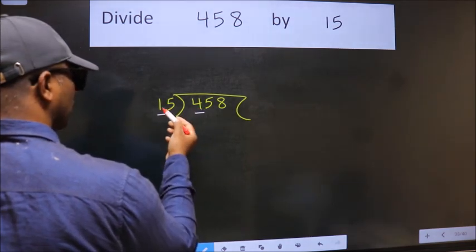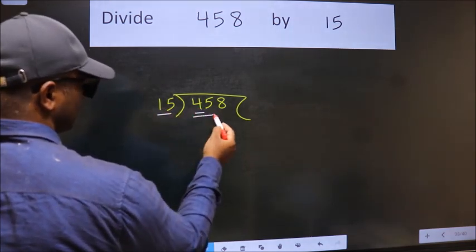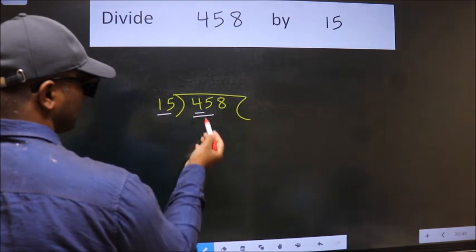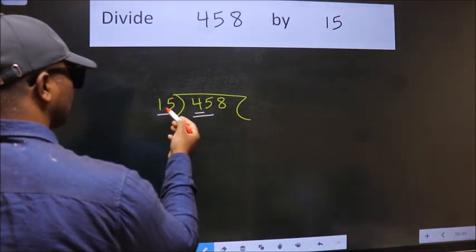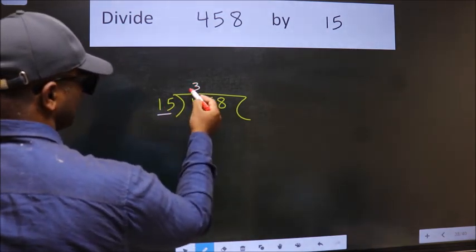4 is smaller than 15, so we should take two numbers, 45. When do we get 45 in the 15 table? 15 threes, 45.